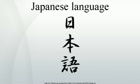Japanese is an East Asian language spoken by about 125 million speakers, primarily in Japan, where it is the national language. It is a member of the Japonic language family, whose relation to other language groups, particularly to Korean and the suggested Altaic language family, is hotly debated.